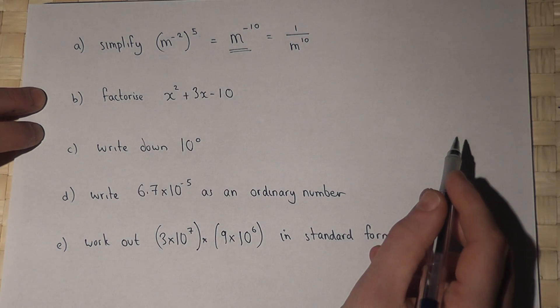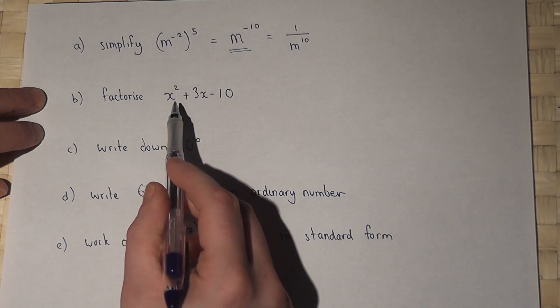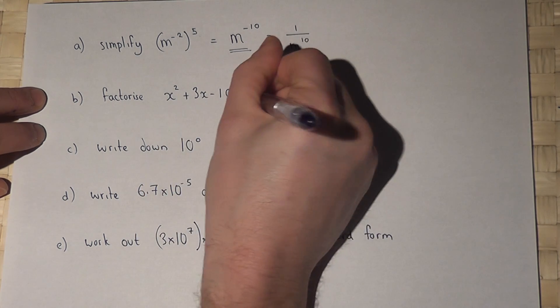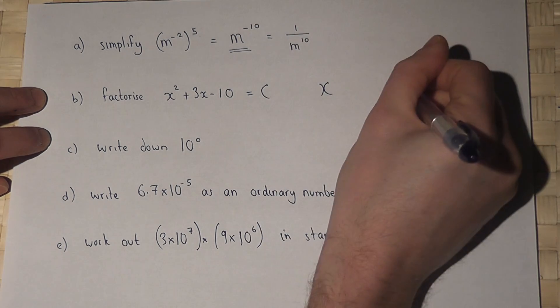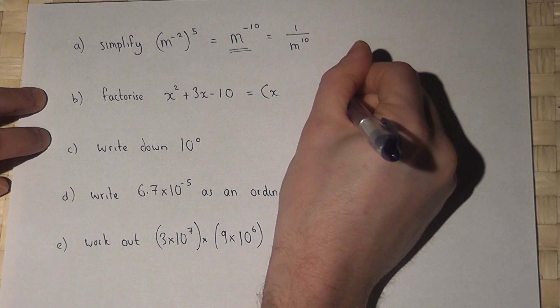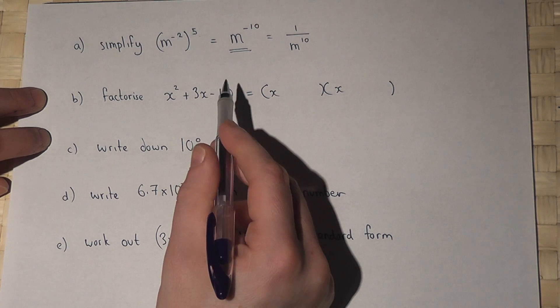When you're asked to factorize this expression here, the three terms indicate to you it is the double bracket, so x and x, and I need two factors of minus ten which combine to give three. Well, five times minus two is minus ten, and five take two is three.